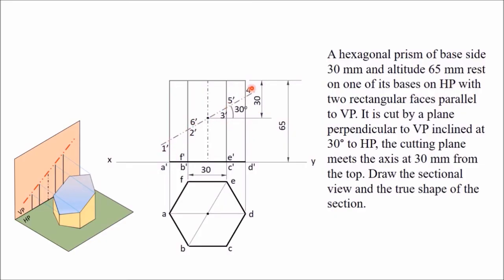When you project all these points into the top view, you can see that 1 dash and A dash are coinciding at the same place. When you look from the top, point 1 will appear with A, 2 will appear with B, 3 with C, 4 with D, and so on. Only points 1, 2, 3, 4, 5, and 6 will be visible — A, B, C, D, E, F are not visible. Therefore, I have removed those. This is what you will get in the top view.